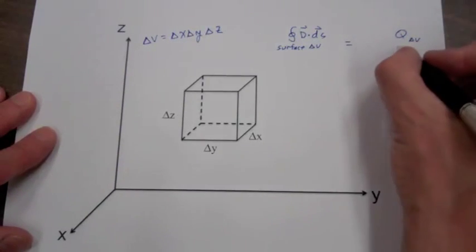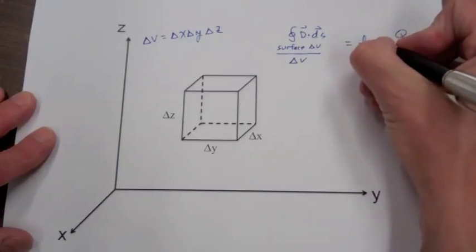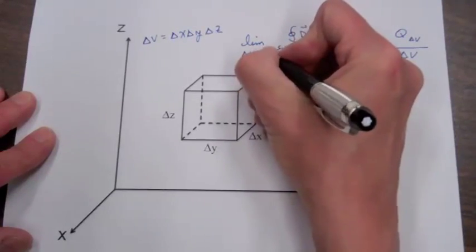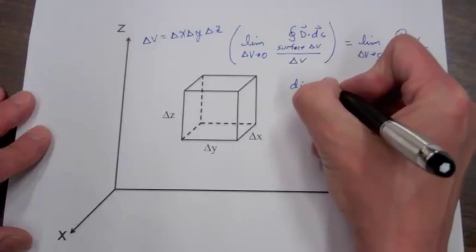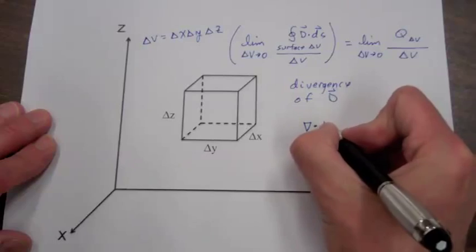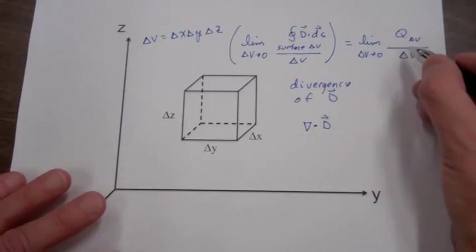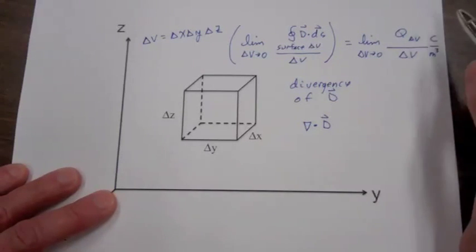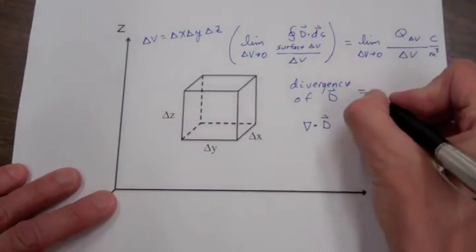The next step is we are going to divide both sides of this equation by delta v and then take the limit as delta v goes to zero. This operation on the left hand side is what is known as the divergence of D, also written as del dot D. Looking at the right hand side, we have charge over volume — coulombs per meter cubed — so as the limit of delta v goes to zero, this is just the charge density at a point, our volume charge density rho sub v.